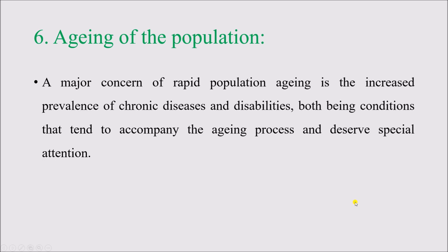Aging of the population means two things. If a population is aging, it means there are now a lot of elderly people — indicating that the health system is good, capable of early diagnosis and cure, so people are living for a longer period of time and fewer people are dying at younger ages. However, aging also comes with many chronic diseases and different disabilities that are naturally part of the aging process, leading to various health issues and mental problems among elderly people.